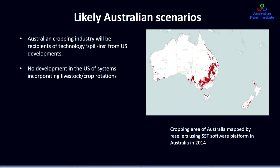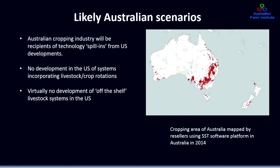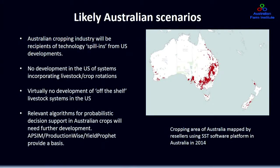There are no developments in the US in terms of systems incorporating livestock and crop rotations — that's the big challenge for Australia, particularly in southern systems, where the real value will be integrating information about livestock and cropping enterprises on a single platform. There's virtually no development of off-the-shelf livestock systems in the US — most are proprietary systems in large feedlots, piggeries or dairy operations. The relevant algorithms for probabilistic decision support in Australian crops will need further development, though there's already some based on the APSIM model developed by CSIRO, and platforms like Yield Prophet operated by Grain Growers.